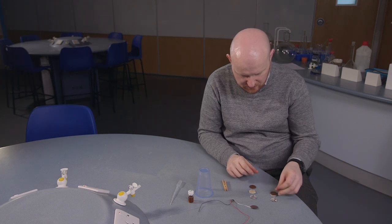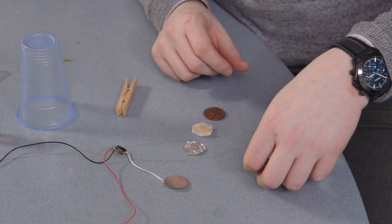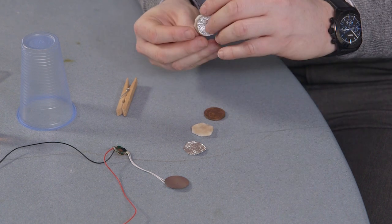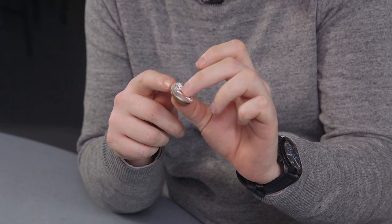And then we put our 2p coin on top of one cotton pad and a piece of aluminium foil underneath. So we're creating basically a sandwich with our cotton pad there soaked in vinegar.